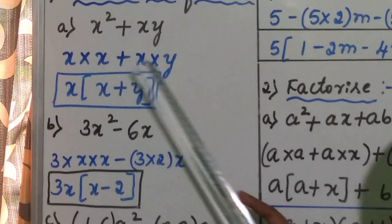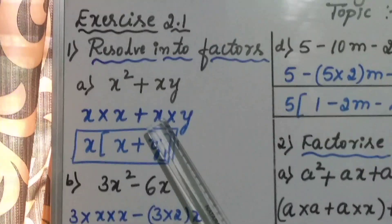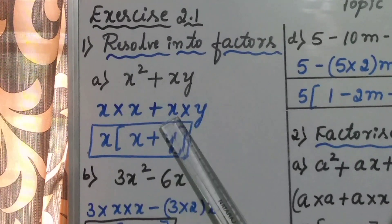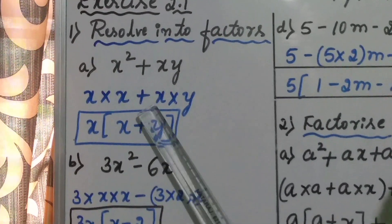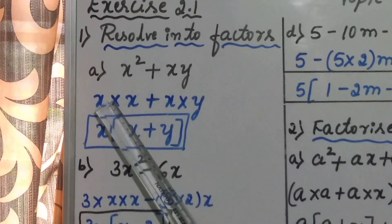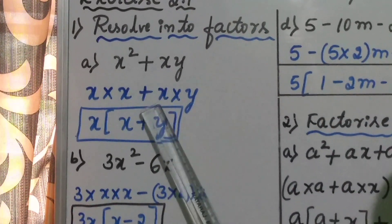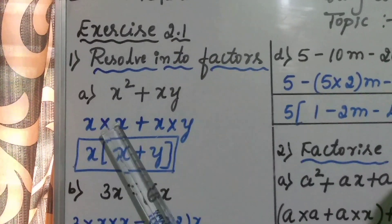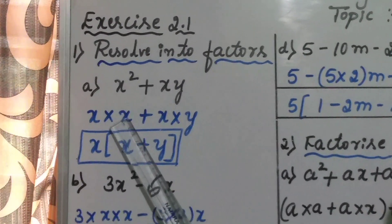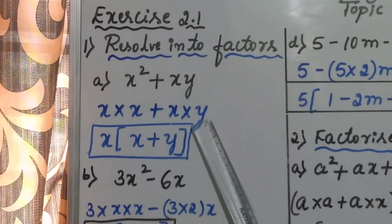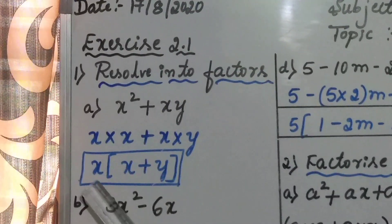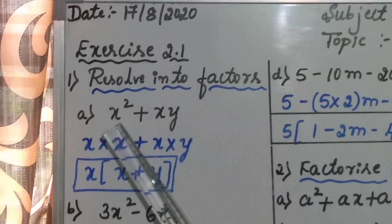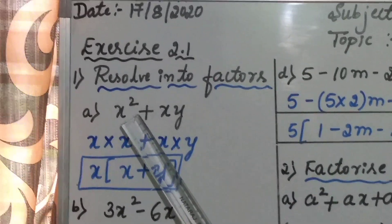Observe carefully children — in the first and second term, which variable is common? You see, x is there in the first term, and x is there in the second term as well. Therefore x is a common factor of both terms. You take x outside the bracket: x into x plus y. Therefore x into x plus y are the factors of the given algebraic expression.